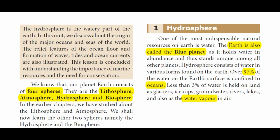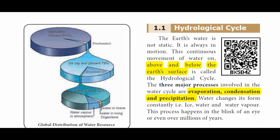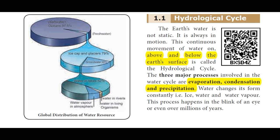Less than 3% is found in glaciers, ice caps, groundwater, rivers, and lakes. Water vapor is also important. Less than 3% is water vapor. Water vapor evaporates and enters the atmosphere from the Earth's surface. That is why water is present in the atmosphere — this is part of the hydrological cycle.